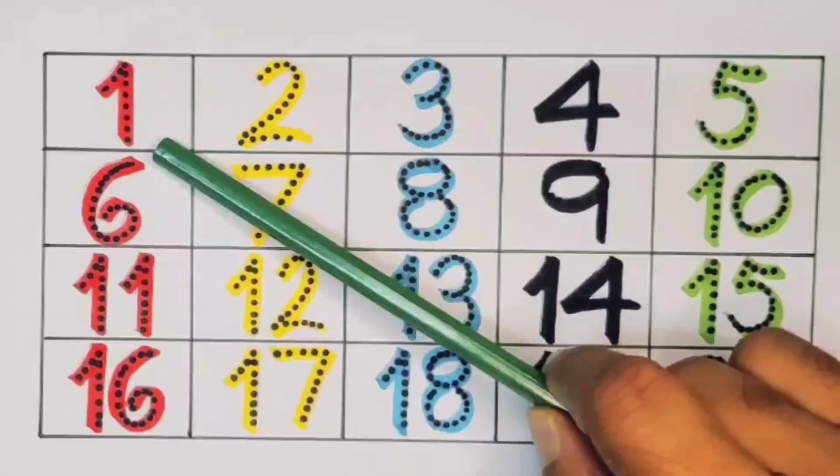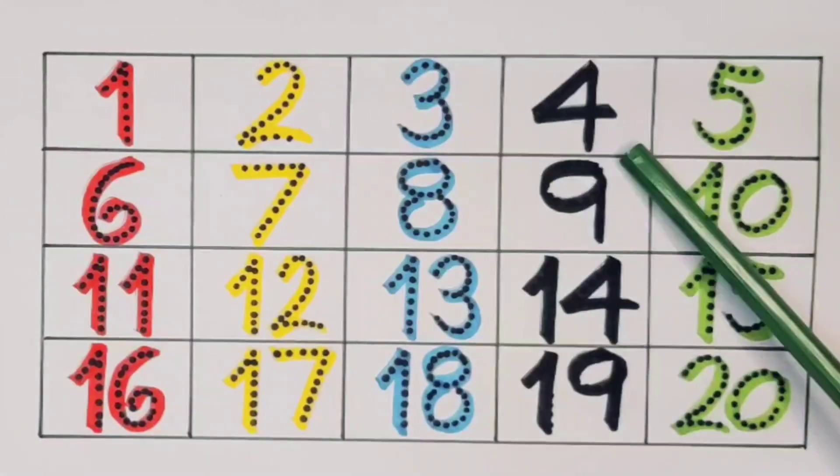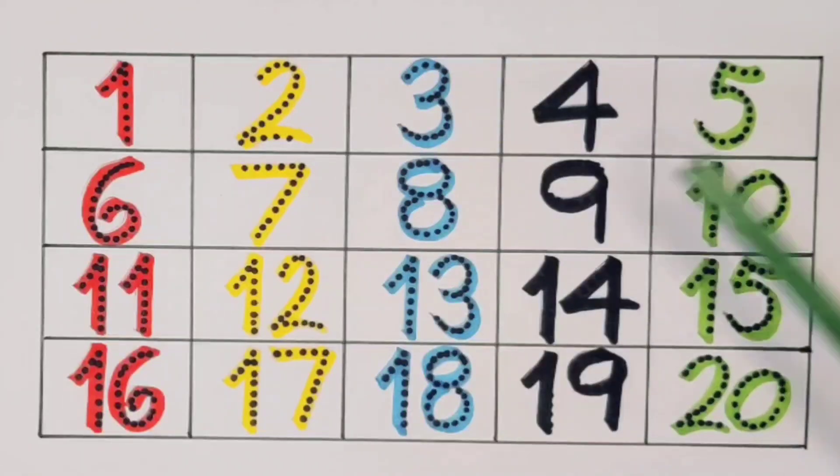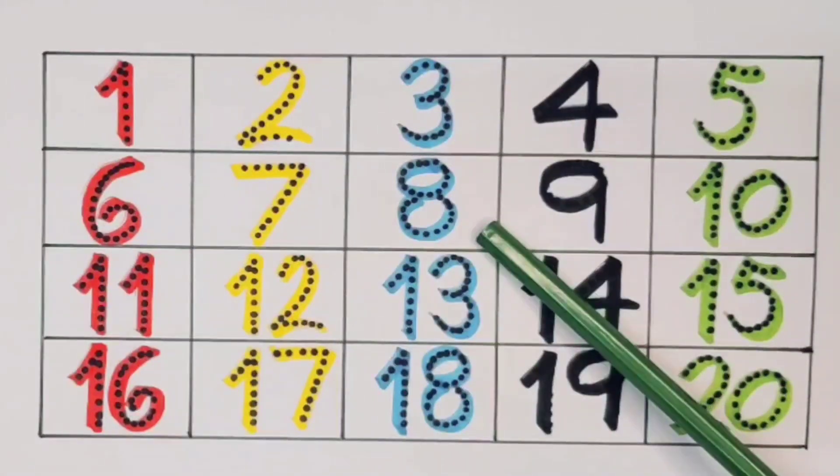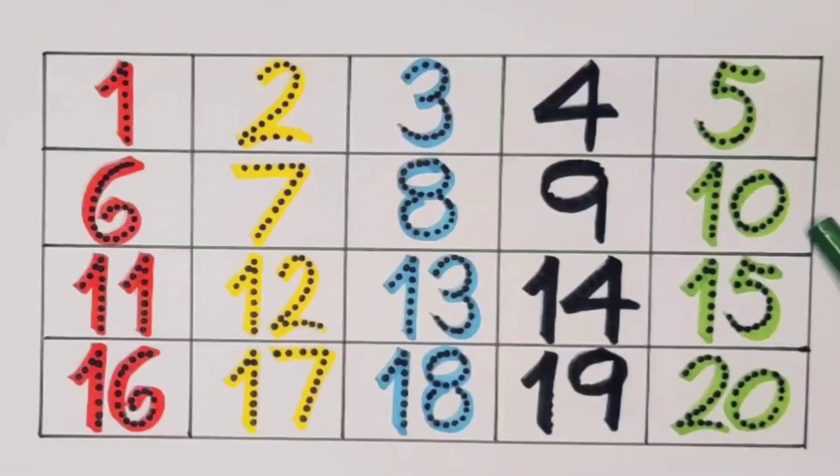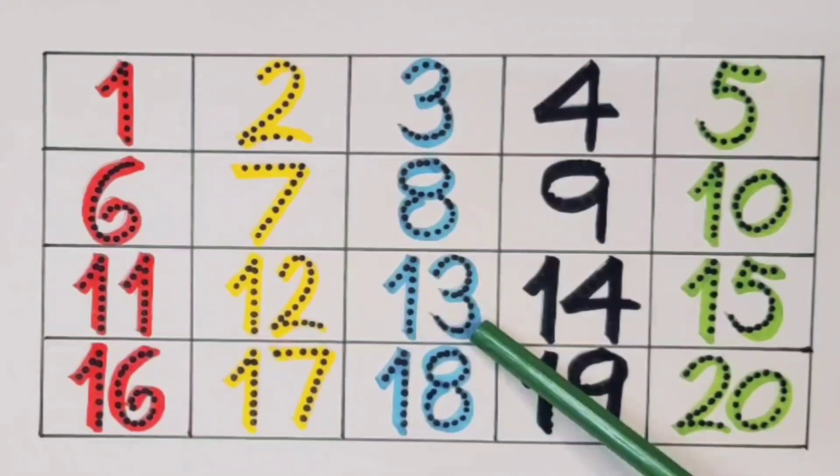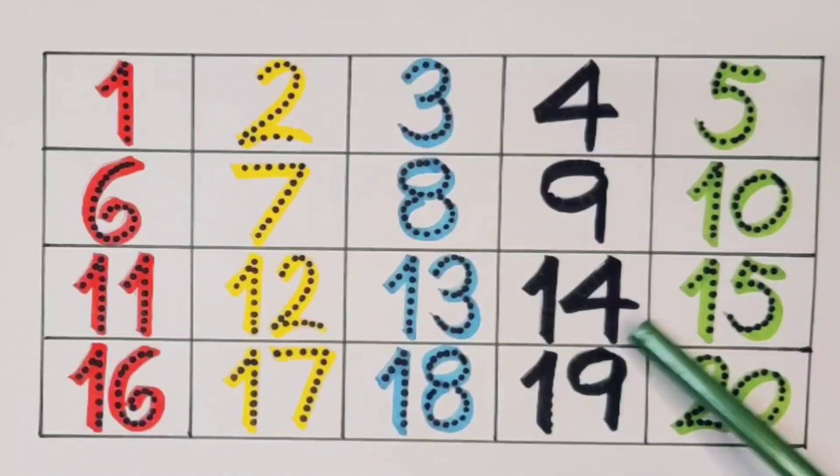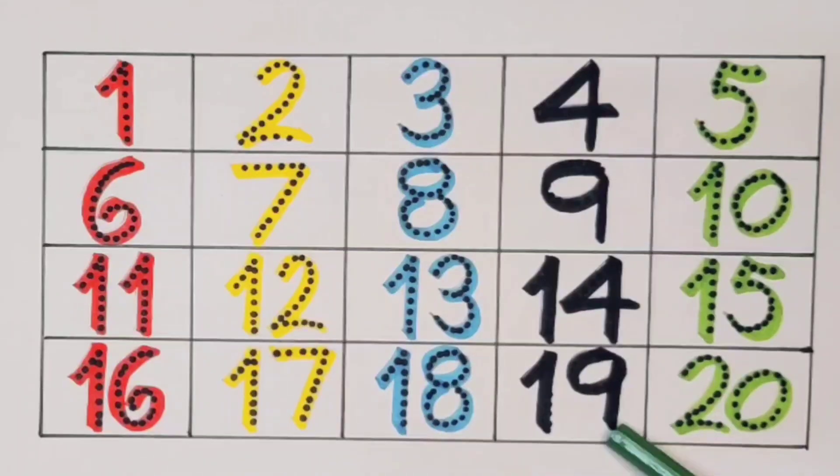We learned one, two, three, four, five, six, seven, eight, nine, ten, eleven, twelve, thirteen, fourteen, fifteen, sixteen, seventeen, eighteen, nineteen, twenty.